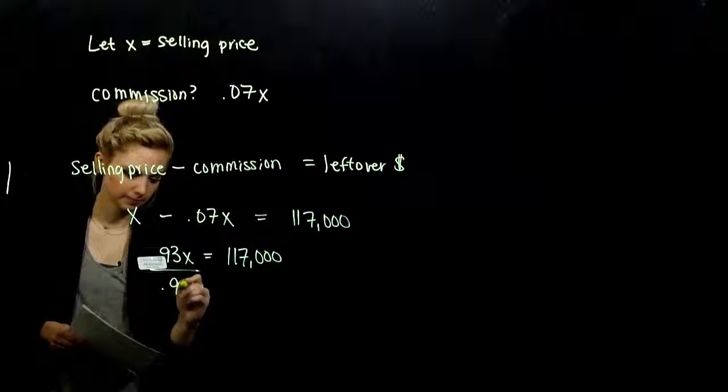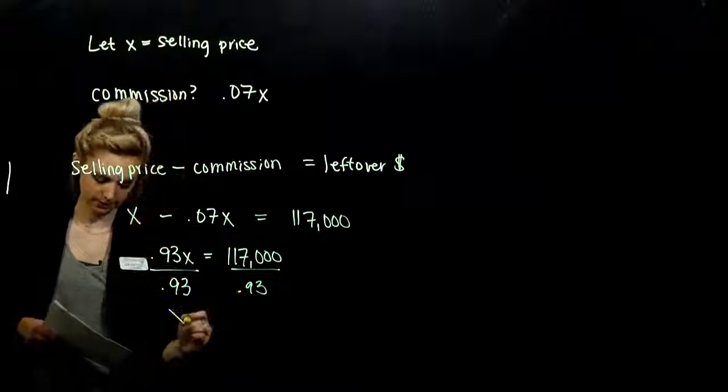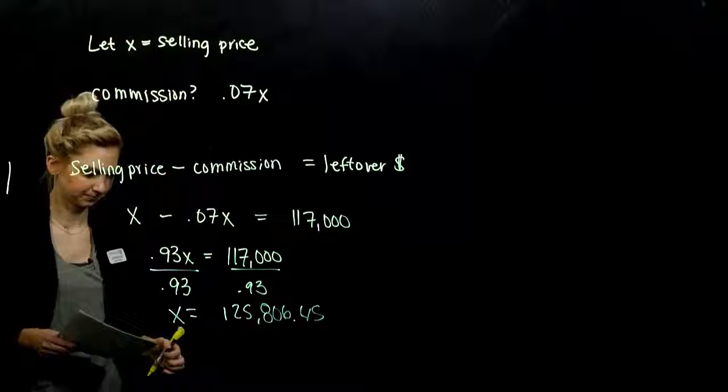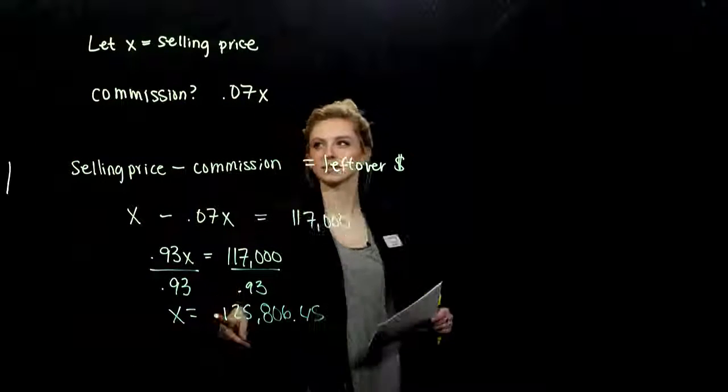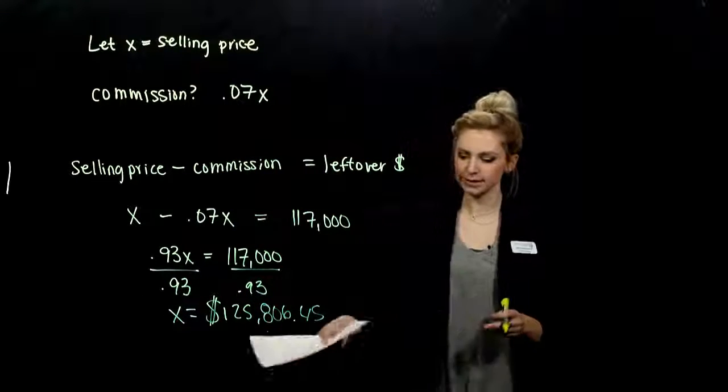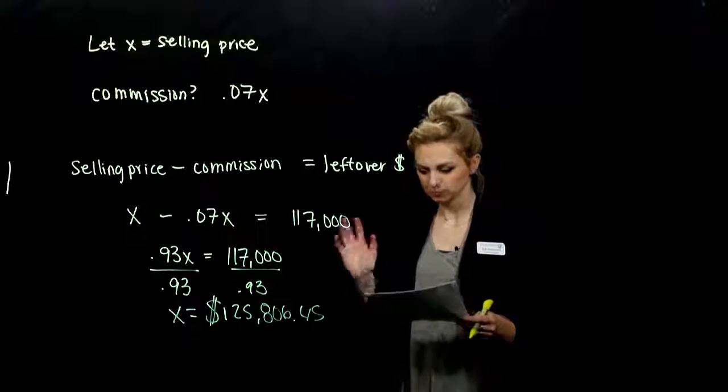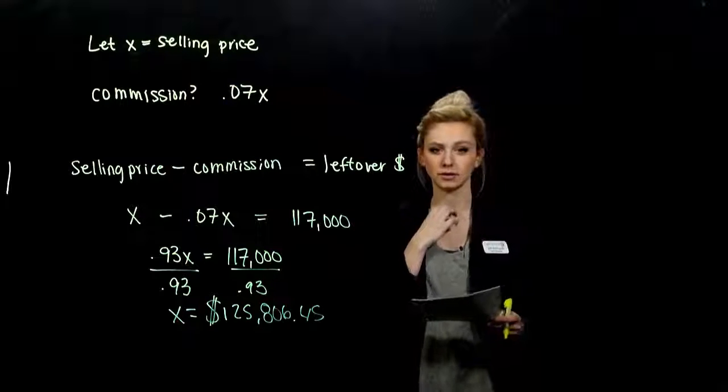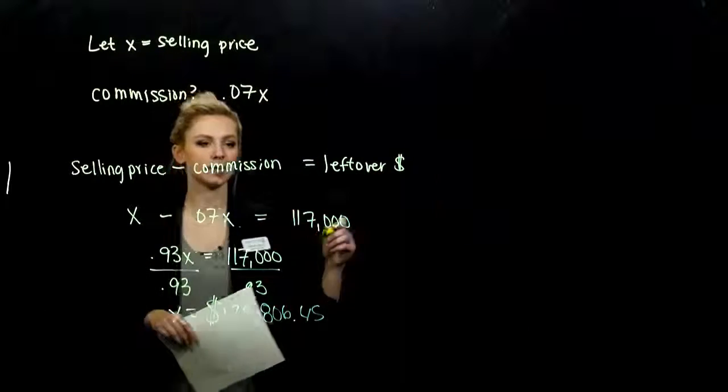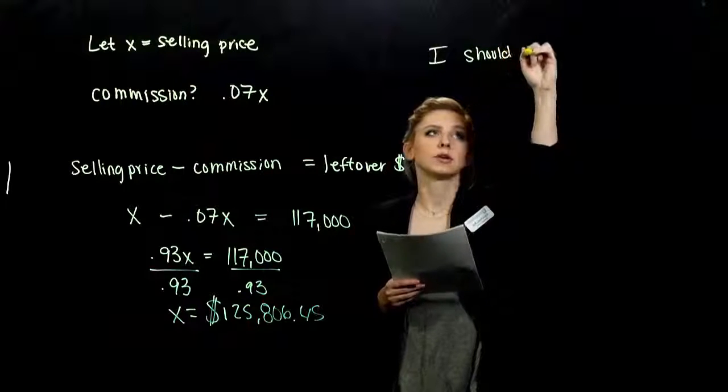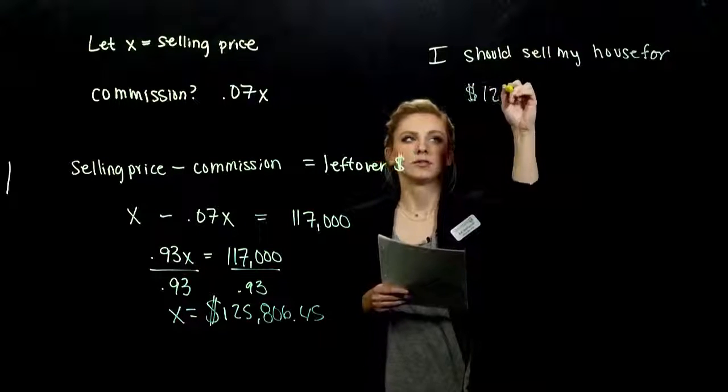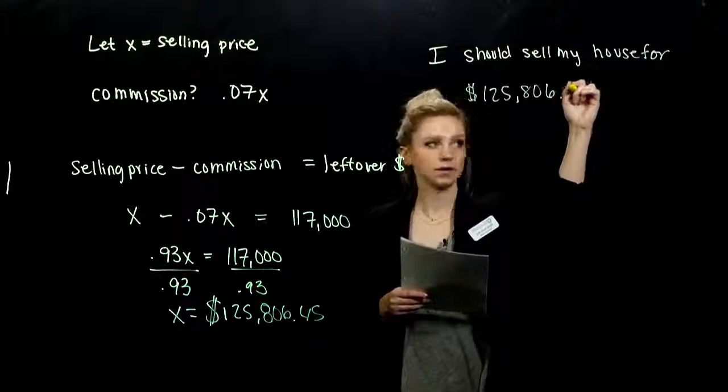So if we do the division, x is going to be equal to 125,806.45. And what are our units on x? We let x be the selling price. So our units, in this case, are dollars. So what does that mean? I should sell my house for around $126,000. So after I'm paying commission to my realtor, I make out with around $117,000. So we want to sum it up. I should sell my house for $125,806.45.